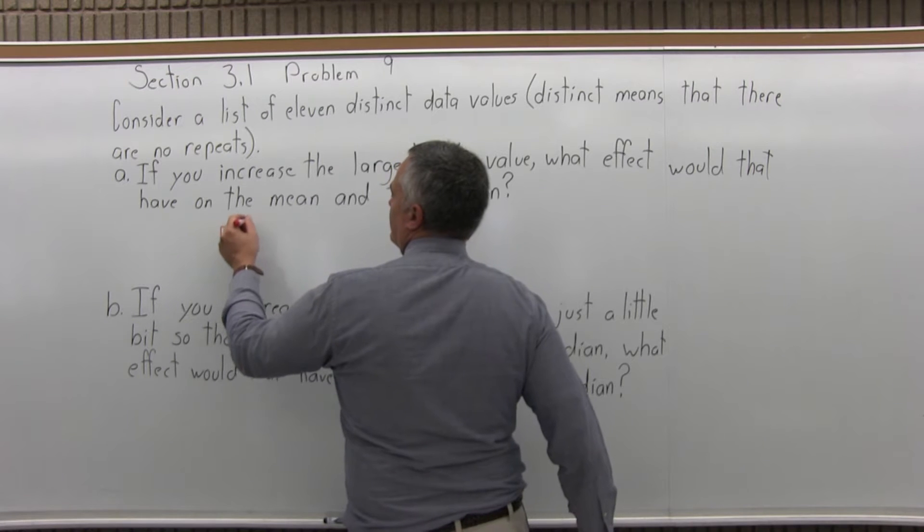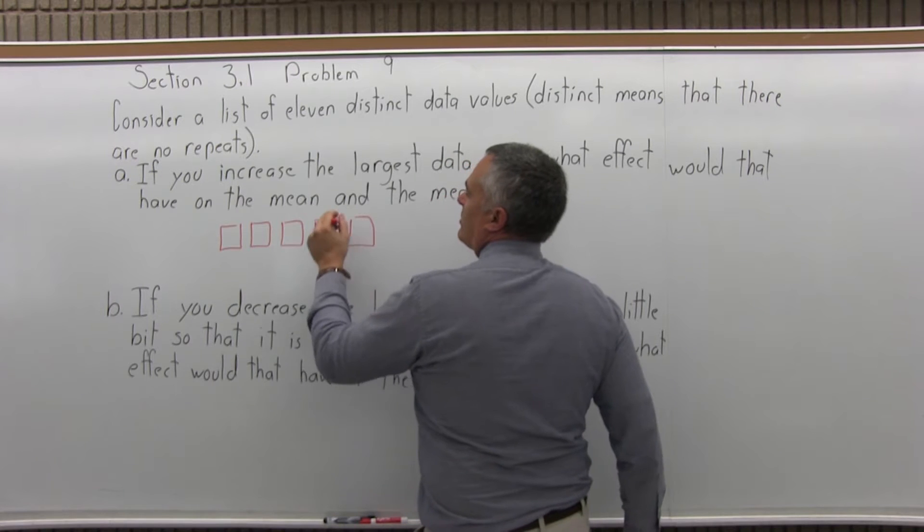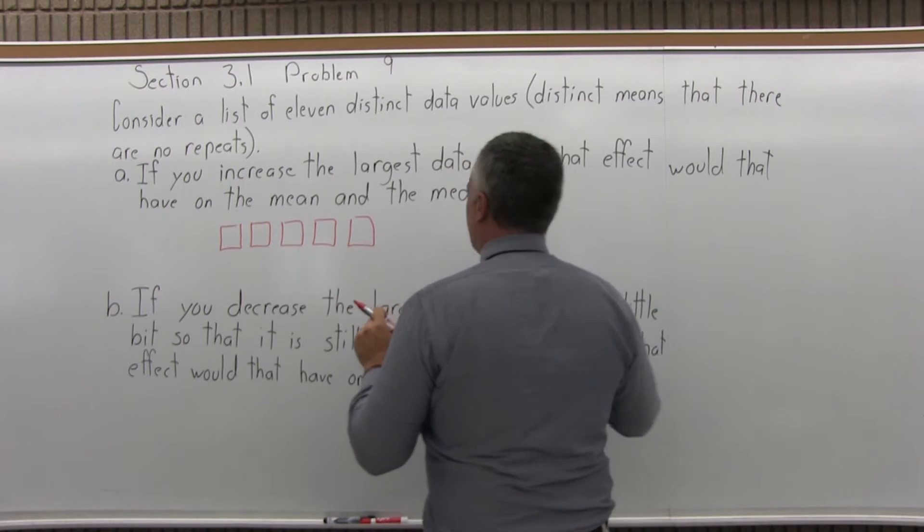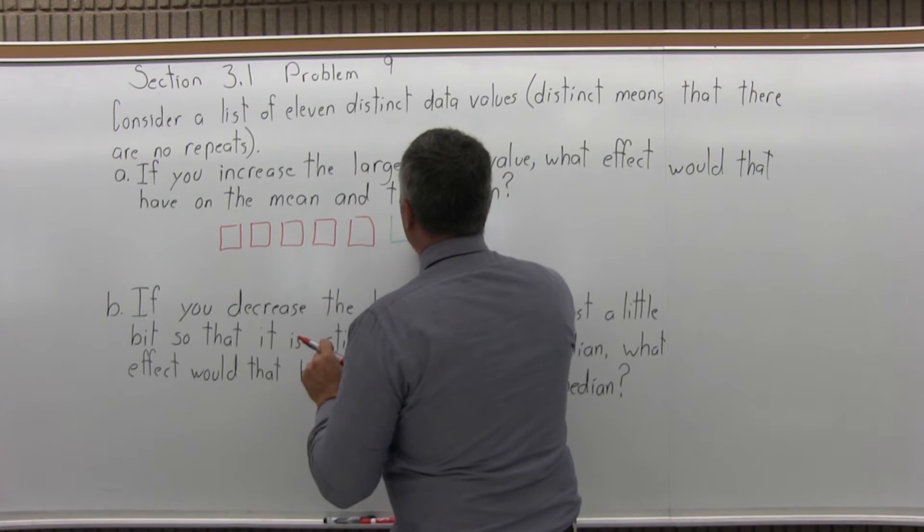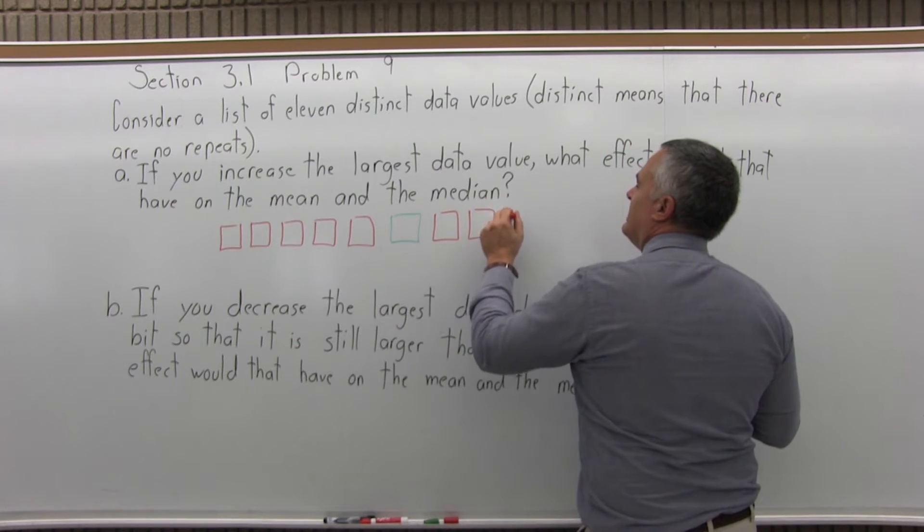It says 11, and it doesn't even say what those 11 numbers are, so let's represent those 11 distinct numbers with 11 boxes. The box in the middle I'm going to make in a different color to represent the median.